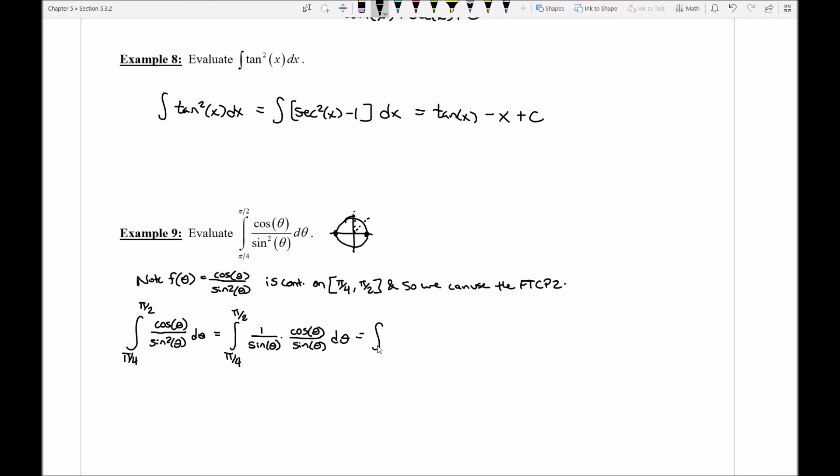Now when I do this, of course I can rewrite each of these different factors here. One over the sine of theta is the same as the cosecant of theta. Cosine over the sine is going to end up being the cotangent of theta, and so really this is equivalent to asking can I find an antiderivative now for my cosecant of theta times cotangent of theta.